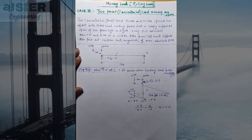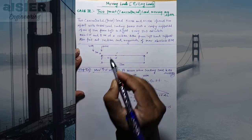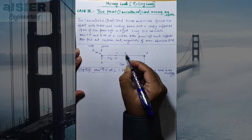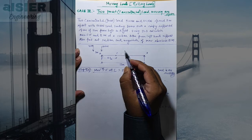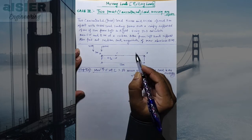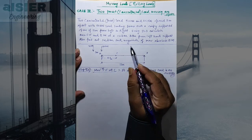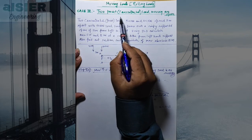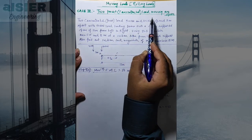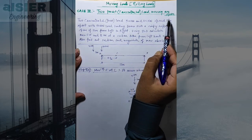Welcome to the video lecture series on theory of structures. In the last video we covered Case 2, in which a UDL longer than the span crosses the girder or bridge. In this case we are going to see Case 3, in which two point loads or concentrated loads are crossing or moving on the span.